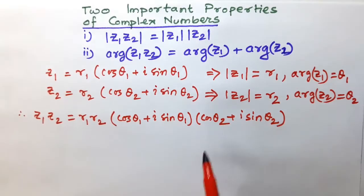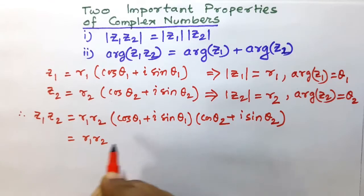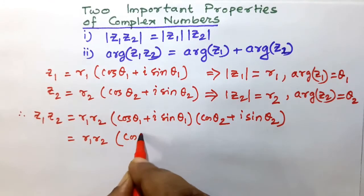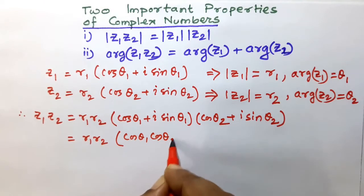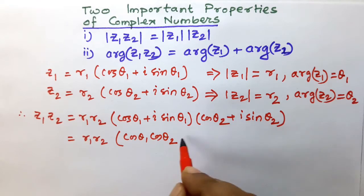Now we shall follow the distributive property. This is R1 R2 into cos θ1 cos θ2, and i into i is i squared, i squared means minus 1.